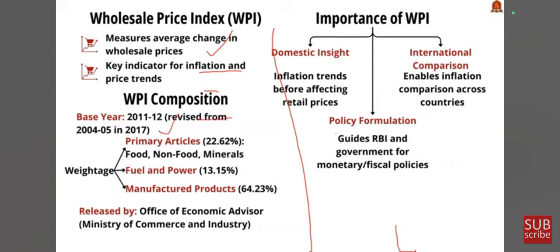Regarding weightage: primary articles hold 22.62%, fuel and power holds 13.15%, and manufactured products holds 64.23% — so the highest weightage is for manufactured products. Also note that WPI is released by the Office of the Economic Advisor, Ministry of Commerce and Industry. The WPI is released monthly with provisional data for the latest month and final data for the previous month. These are the general facts to remember about WPI.